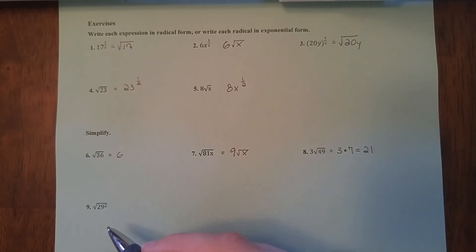Last question. And this one just tests to see if you understand what an exponent of 1 half is and an exponent of 2 is. So right here, I have the square root of 29 squared. So basically, the radical and the exponent are opposites. So what's going to happen is these two are going to cancel each other out, and this is going to just be 29.